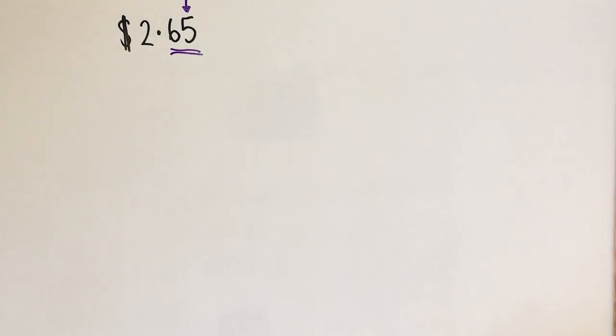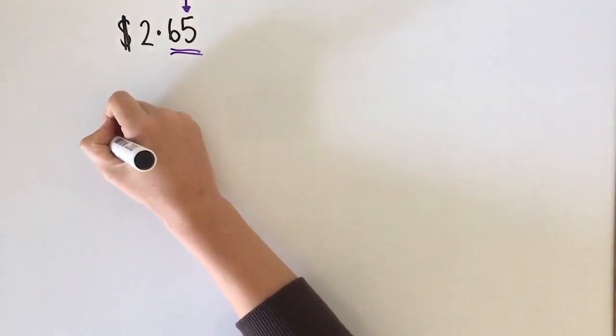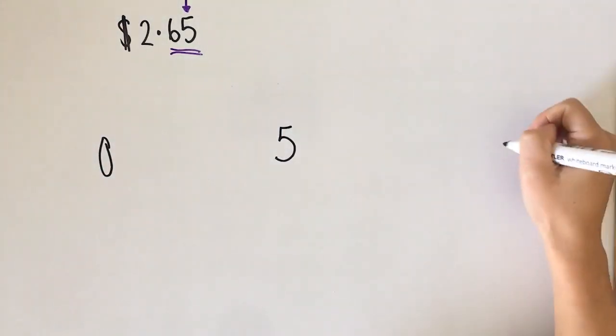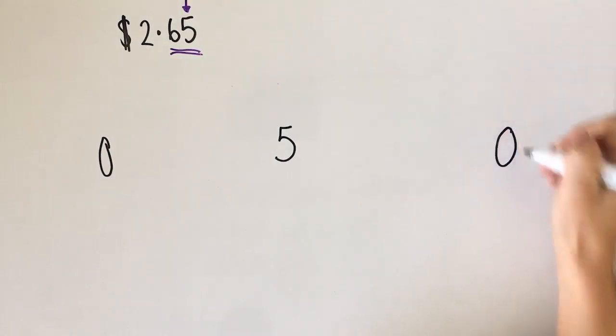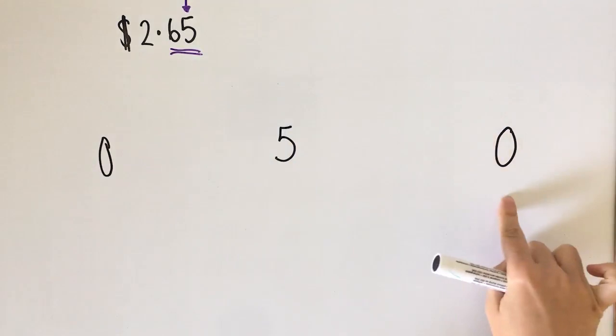What we need to know is that if we're rounding to the nearest five cents we can round to zero and we can round to five. But then we can also round up to zero as well. So we can round down to zero or we can round up to zero.